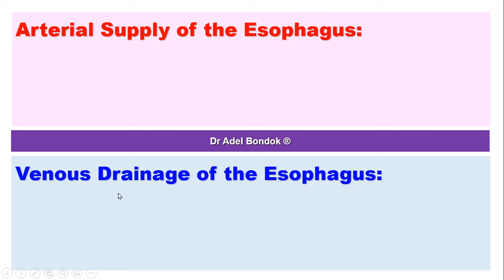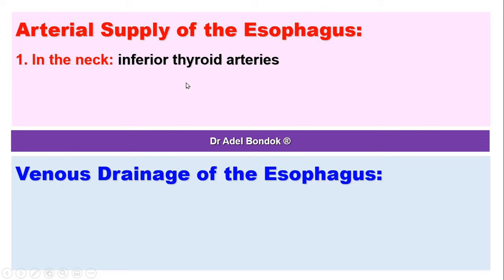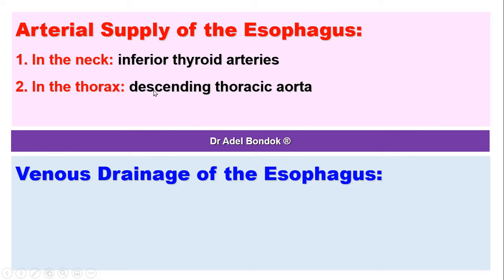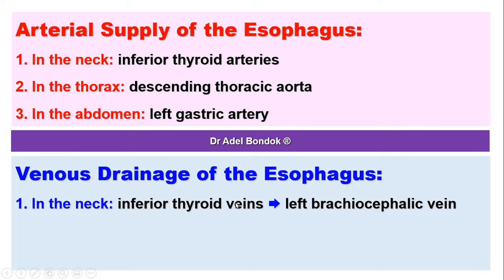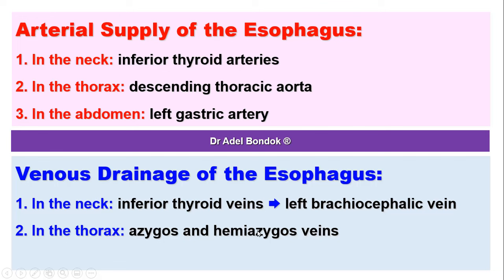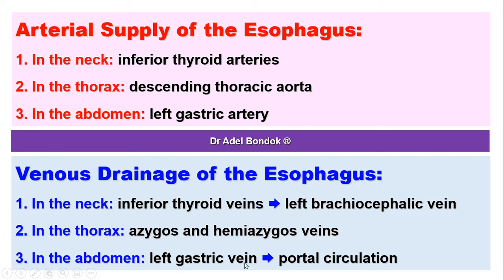Regarding arterial supply: in the neck, the esophagus is supplied by the inferior thyroid arteries; in the thorax, by branches from the descending thoracic aorta; and in the abdomen, by branches from the left gastric artery. For venous drainage: in the neck, the inferior thyroid veins drain into the left brachiocephalic vein; in the thorax, drainage is via the azygos veins; and in the abdomen, via the left gastric vein, which joins the portal circulation.